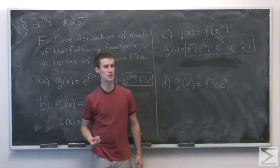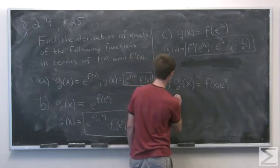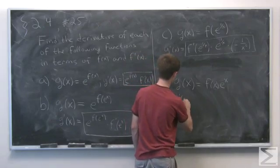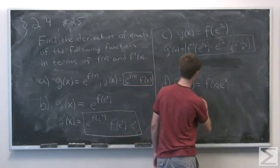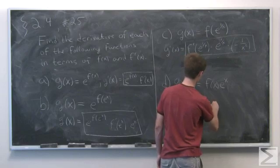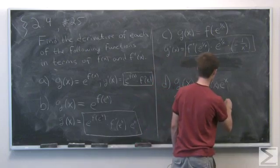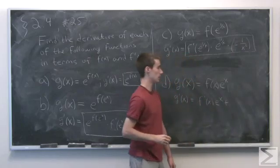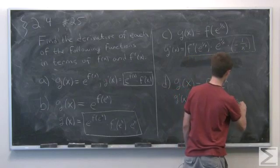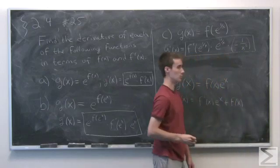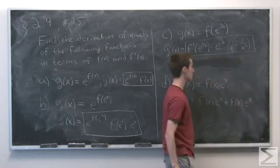And finally, in part d, we're given g of x equals f of x times e of x. There's no chain rule here, but we will need to apply the product rule. So take the derivative of the first part of the product and multiply it by the second. And then we add the same thing, but in reverse. So we take the first term and leave it alone, and multiply it by the derivative of the second term, which is just e to the x.